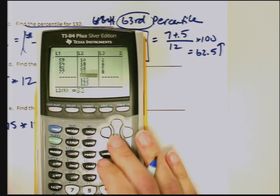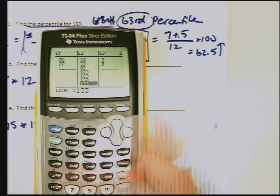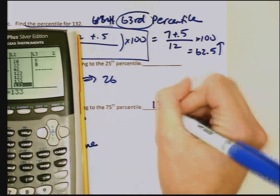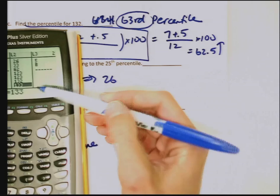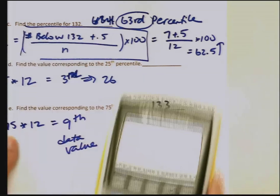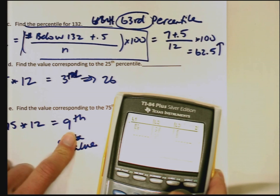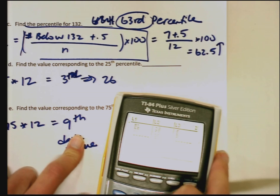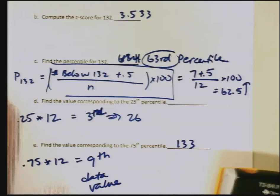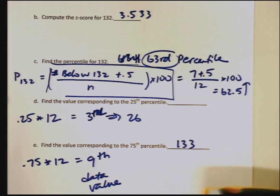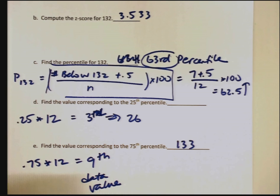So I'm going to go back to that list that I ordered. Edit. 1, 2, 3, 4, 5, 6, 7, 8, 9. So that would be 133. So the key is that your values are in order. You find out what percentage you are along the data. 0.75 times 12 is 9, so I wanted that ninth data value at 133. So those give us both measures of position for z-scores and the percentiles. In the next video, we're going to take a look at quartiles and box plots.